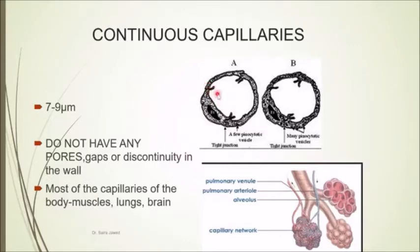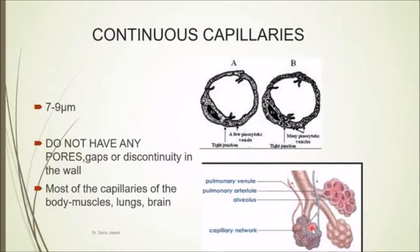If pores were present in the lung capillaries, unwanted substances would also enter and cause congestion in the lung. Therefore, the capillary network over the alveoli consists of continuous capillaries, because only gaseous exchange should take place there.